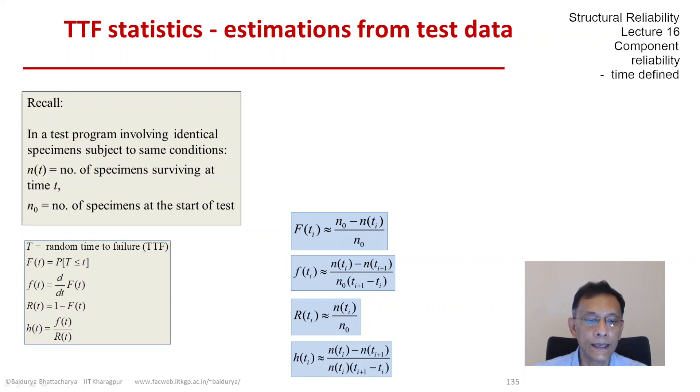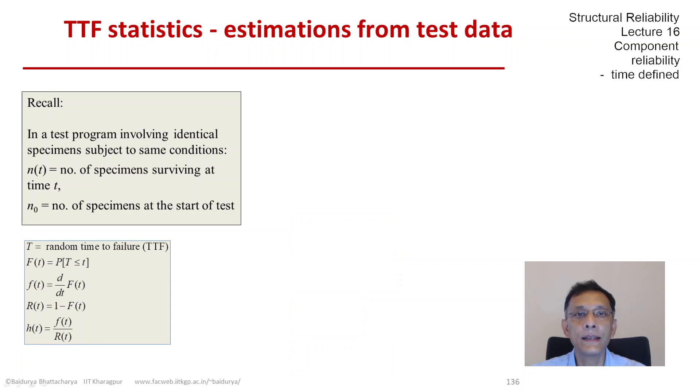So this is what we learned. And then there are certain other equivalent ways of estimating these quantities. For example, we could start with the relationship between reliability function and the hazard function. As you remember, r of t is exponential of negative the integral of h of x between 0 and t, h being the hazard function.